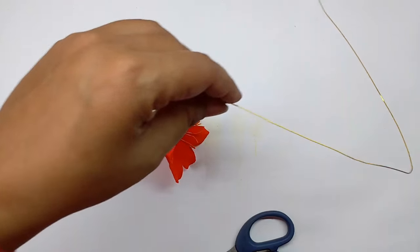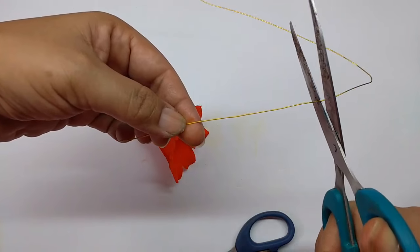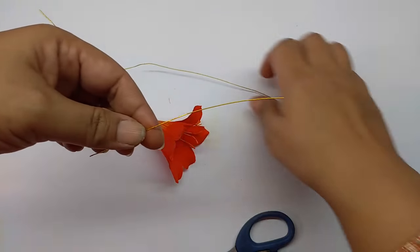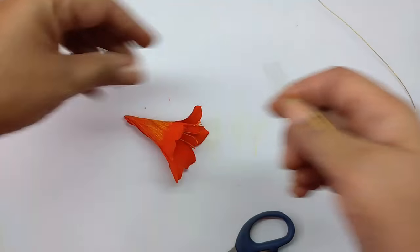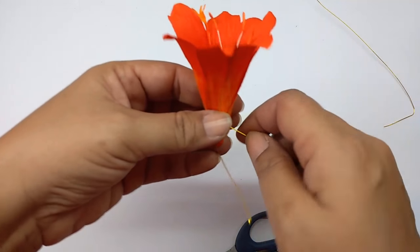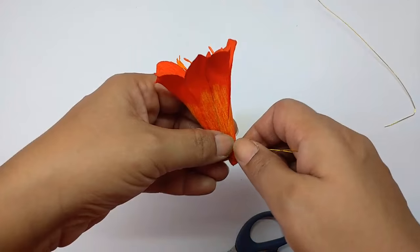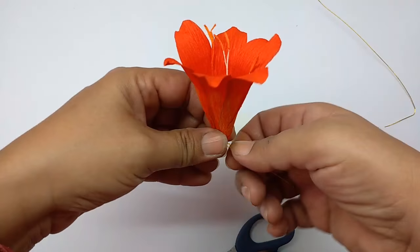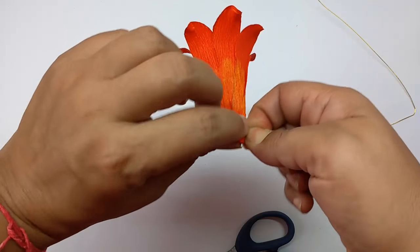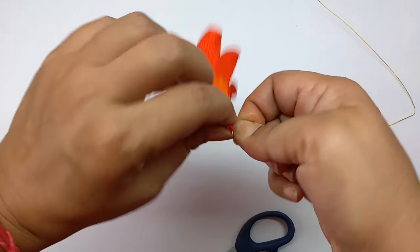Now take the thin wire and cut about 4 inches long piece from it. Fold it to the center, put the flower here at the base, push it up towards the folded side and give it two to three twists.